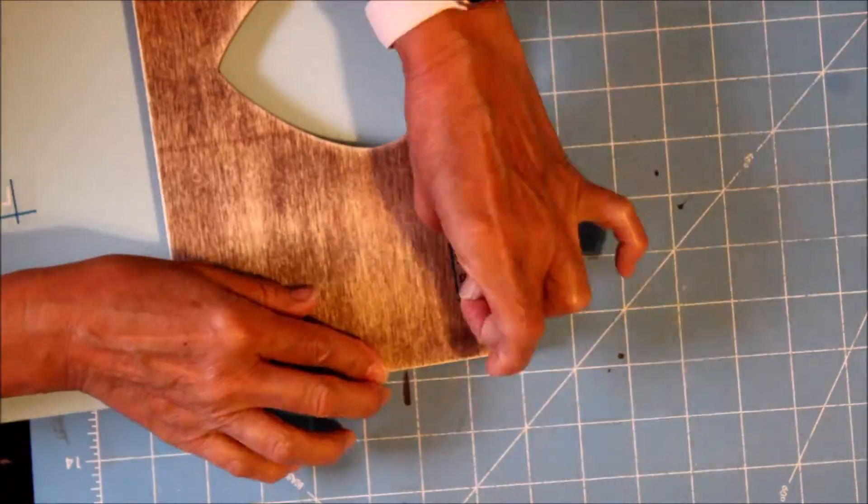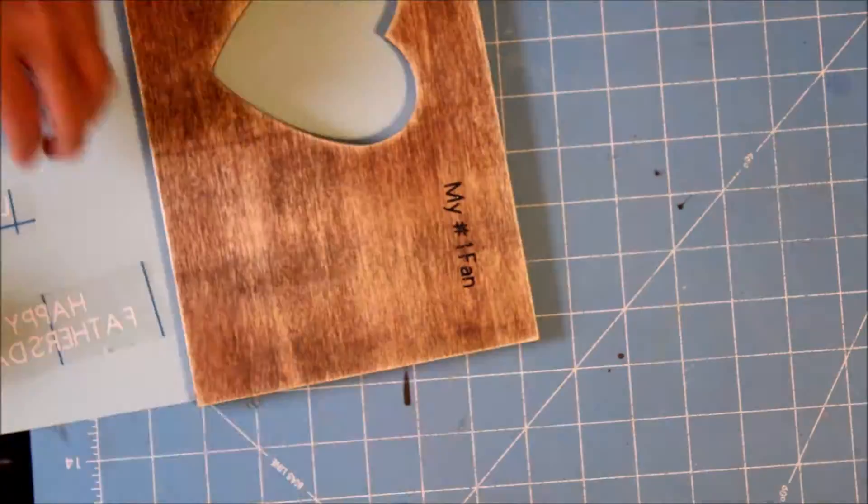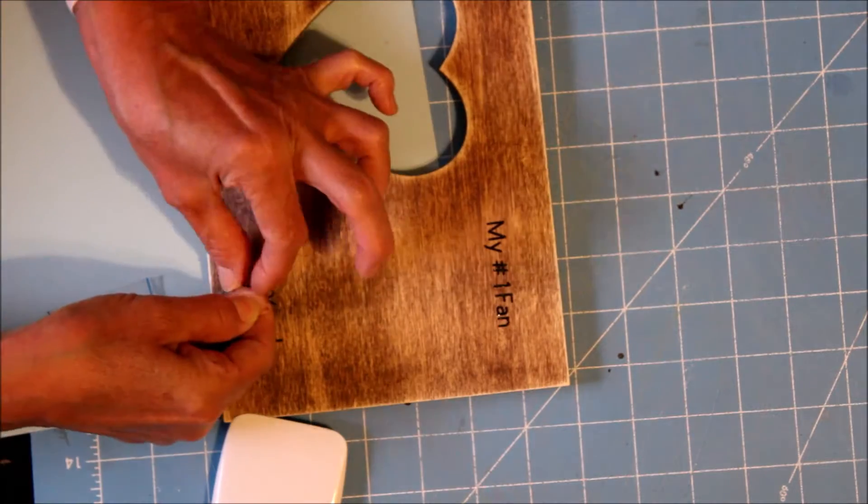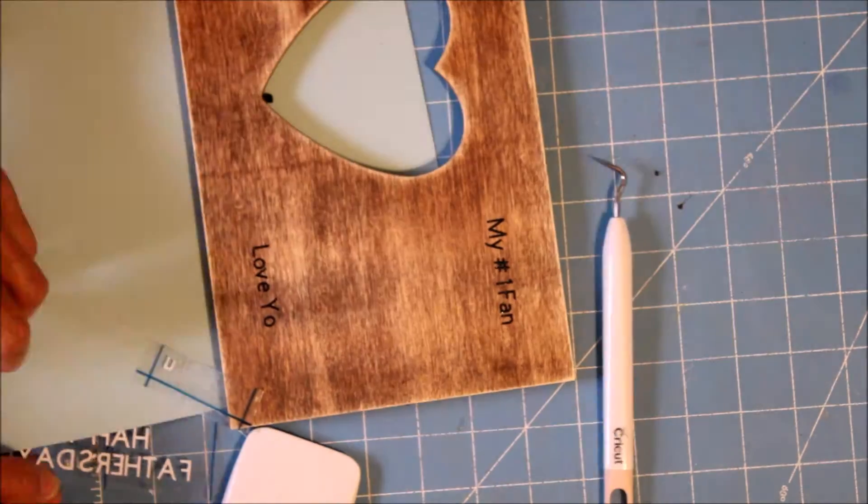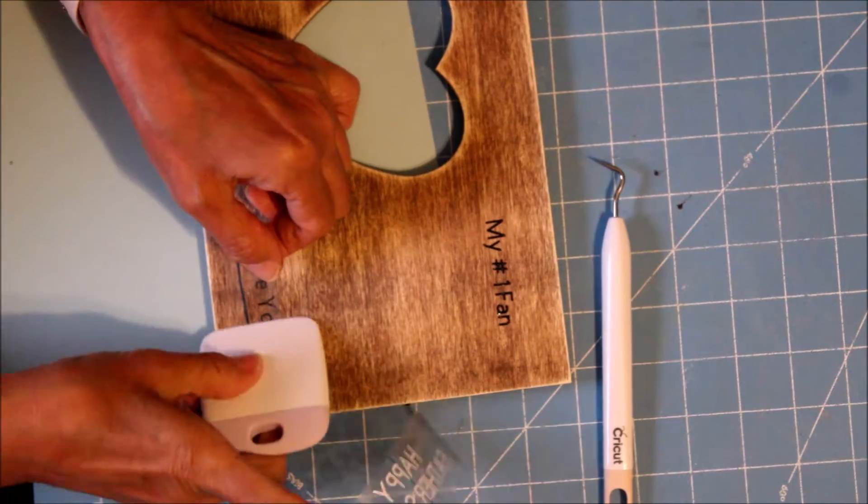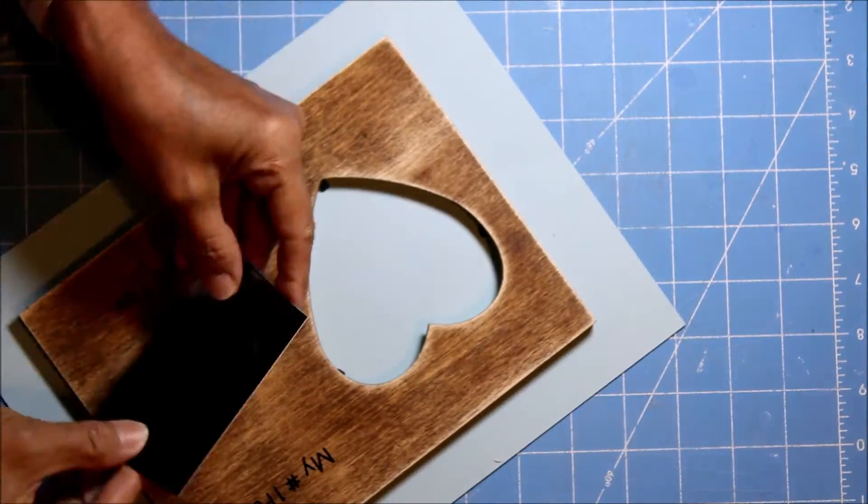The next thing I'm doing is adding this vinyl that I pre-cut with my cutting machine. If you don't have a cutting machine, you can also have the same effect using stencil and paint.